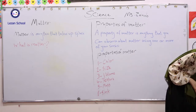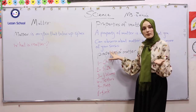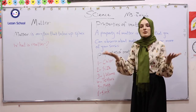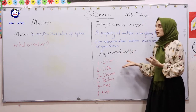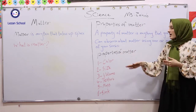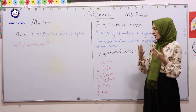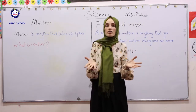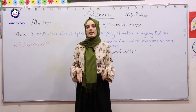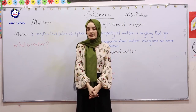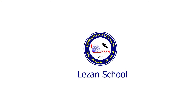Today we talked about properties of matter. First, what's the meaning of matter? And what are the properties of matter? They are color, size, volume, texture, and mass — all of them are properties of matter. Thank you for listening.